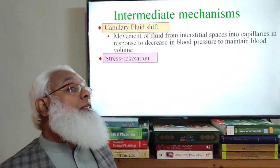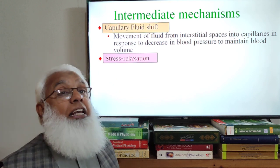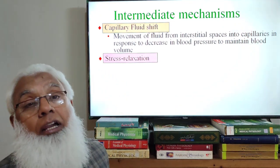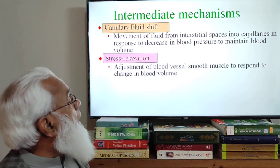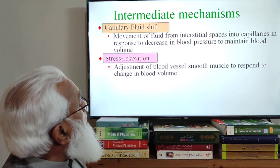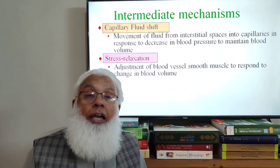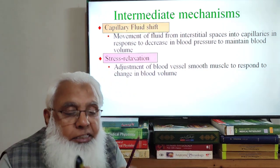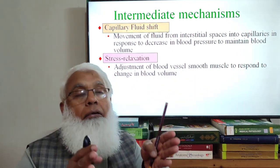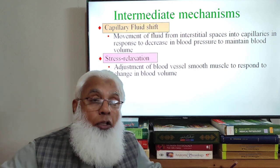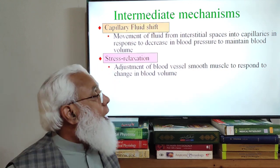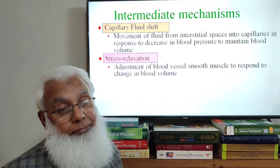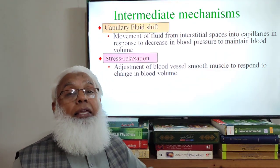Then there is the stress relaxation phenomenon — also called delayed compliance. This is the property of smooth muscle in blood vessel walls to adjust according to available blood volume. If blood volume is reduced, the length of blood vessels is also reduced, adjusting total vascular capacity to available blood volume. If blood volume increases, their length increases to accommodate it. This is the reverse stress relaxation phenomenon we discussed under delayed compliance.